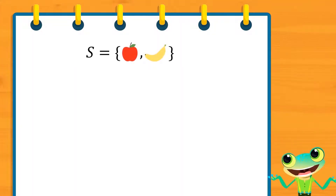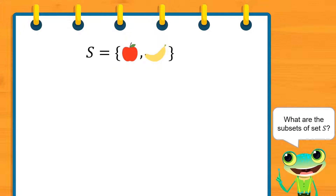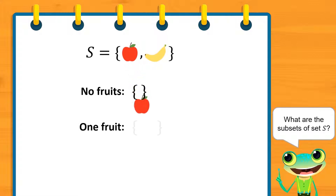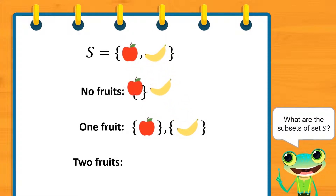Let us take a look at set S. It consists of one apple and one banana. What are the possible subsets of this set? For starters, we have a set that does not have any fruits — the null set. Next, we have sets that consist of one fruit only. Then, we have the set that consists of two fruits, which is set S itself.